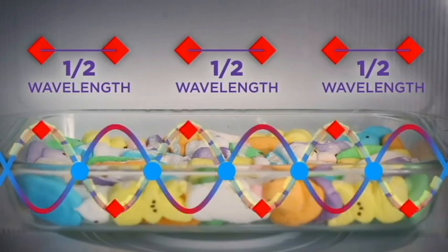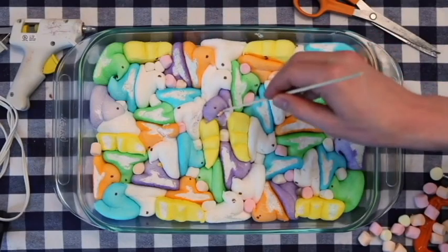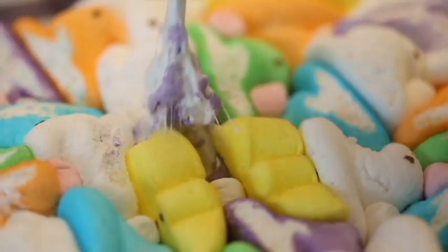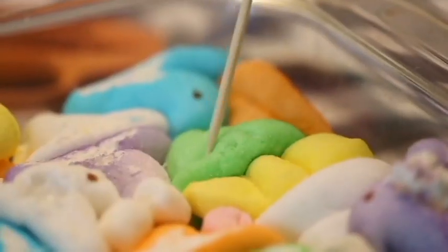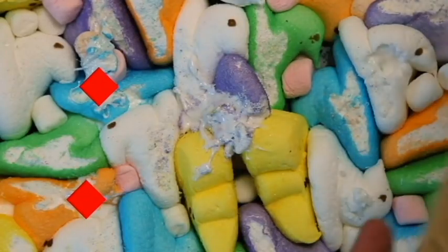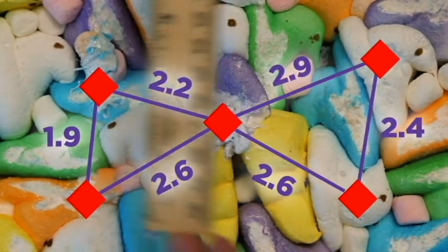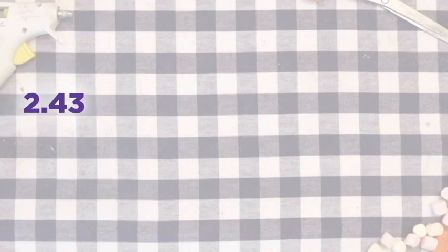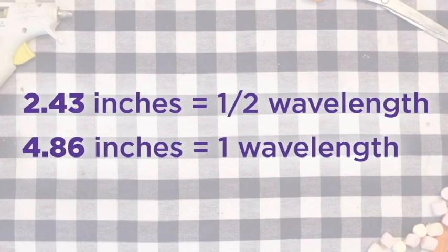So in theory, if I measure the distance between melted peeps, I can find the wavelength. And sure enough, some of the peeps are really gooey while others haven't melted at all. Poking around, I found a rough location for a handful of hot spots and measured the distance between them. Those averaged out to 2.43 inches, so that's half a wavelength. Multiply by 2 and we get a wavelength of 4.86 inches.